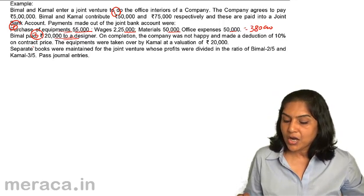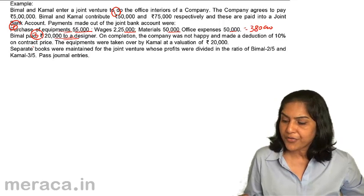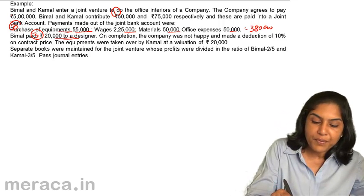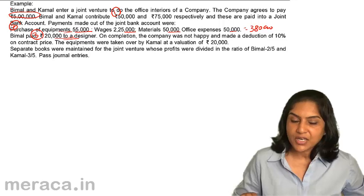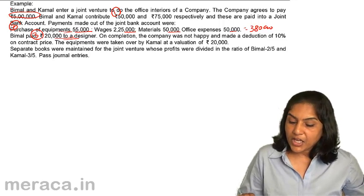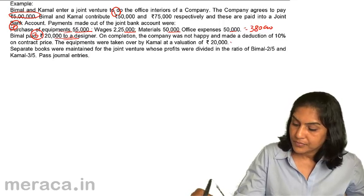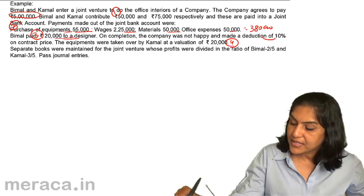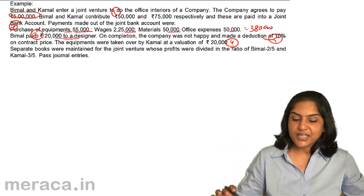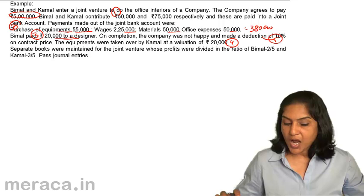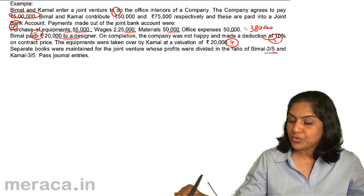On completion, the company was not happy and made a deduction of 10% on the contract price. The contract price was 5,00,000, so we would get 5,00,000 less 10% (50,000), meaning we receive only 4,50,000. The equipments were taken over by Kamal at a valuation of 20,000. Separate books were maintained for the joint venture and profits were divided in the ratio 2:3.